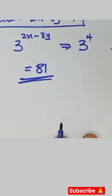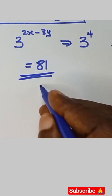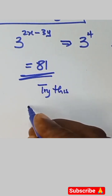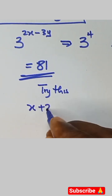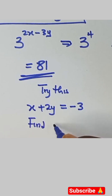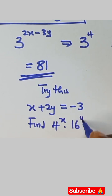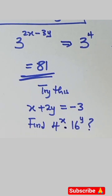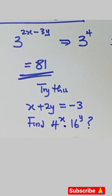Now let's solve something similar. We have x plus 2y equals minus 3. Find 4 raised to power x multiplied by 16 raised to power y. Try to write your answer in the comment section.